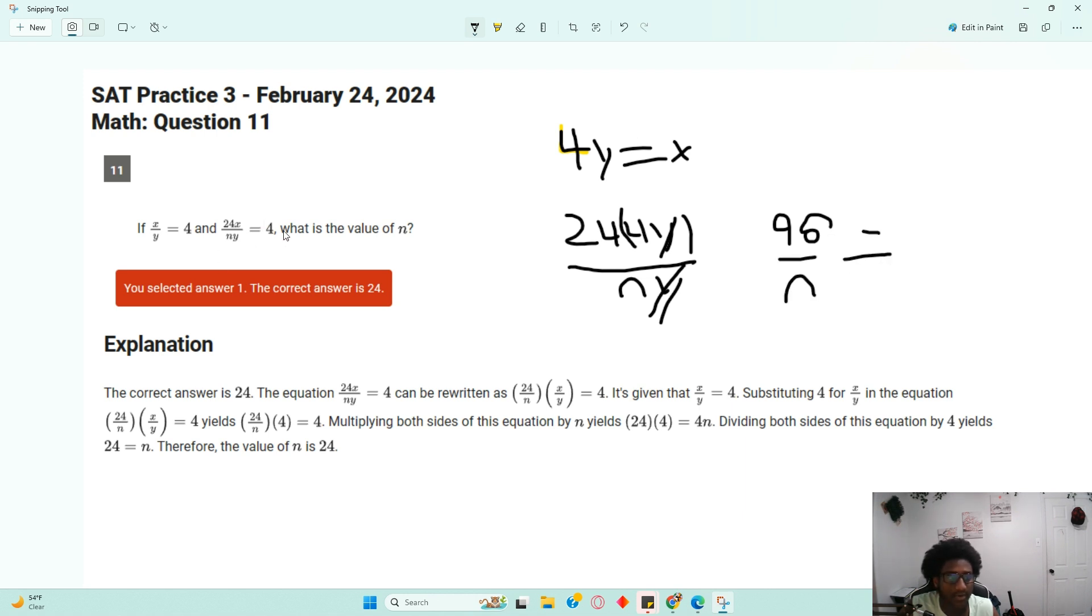And then don't forget, this equals 4. Set equal to 4. And just to write it out, we know that 4n equals 96. So you divide by 4 to get n equals 24, because 96 divided by 4 is 24.